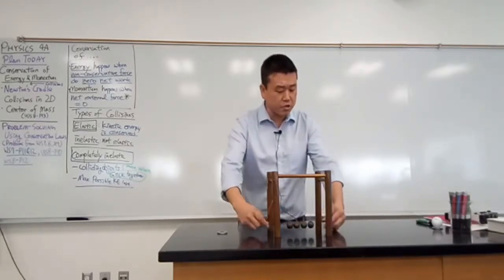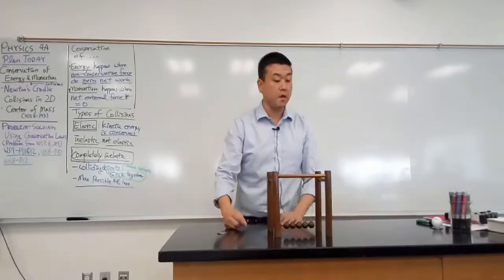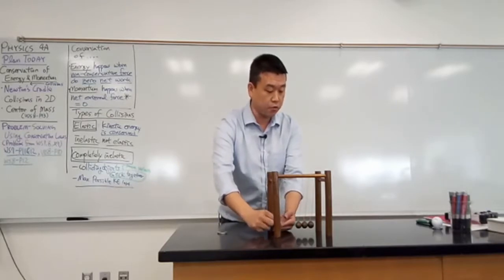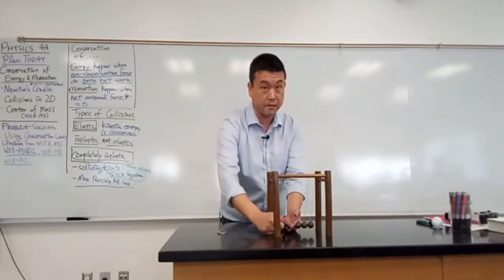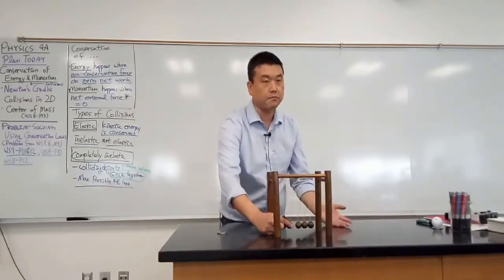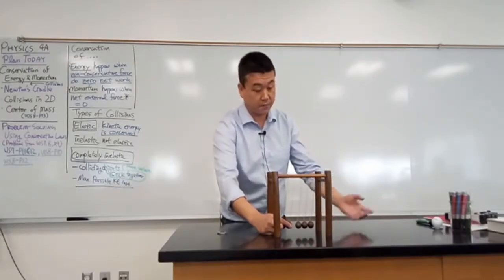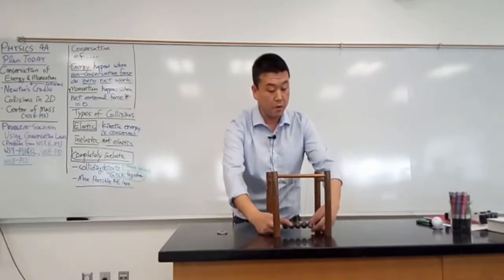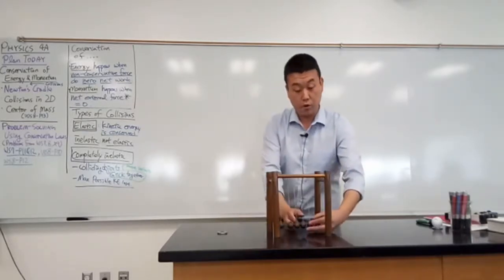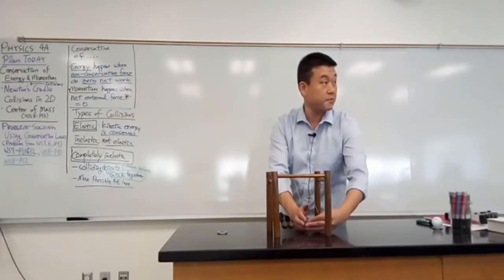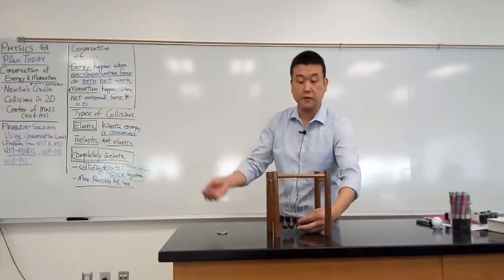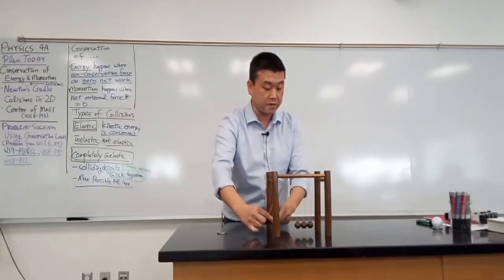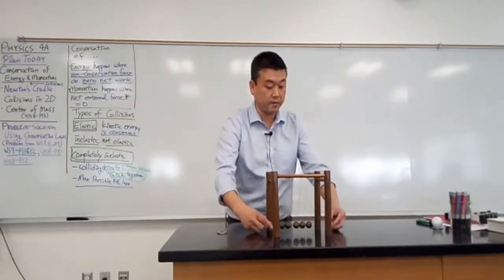Let's look at this Newton's cradle and try to answer the question: why is it that if I move two balls off to the side, and these two balls come in with some speed, then out of many different possibilities — either one ball comes out with all the energy, or two balls come out with the same velocity, or even three balls come out with a slower speed — out of all those possibilities that all conserve energy, the only thing that happens is the same mass comes out with the same speed.